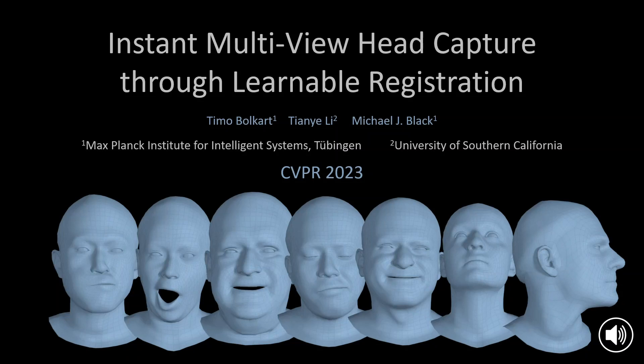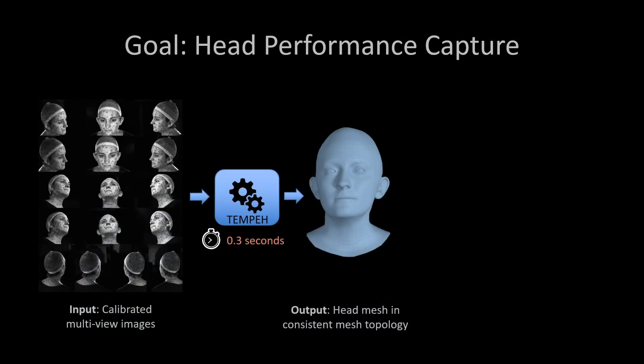We present TEMPER, which stands for Towards Estimation of 3D Meshes from Performances of Expressive Heads. Given calibrated multi-view images, TEMPER infers 3D head meshes in dense semantic correspondence in about 0.3 seconds. Each of the predicted heads has 5023 vertices and they share a common mesh topology, done directly from the images without requiring stereo reconstructions or 3D meshes as input.